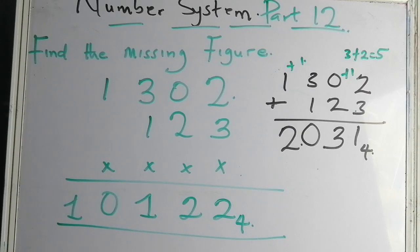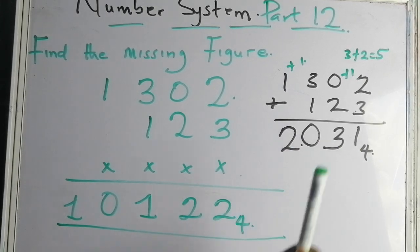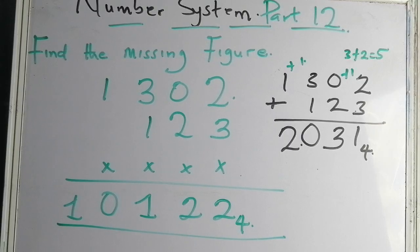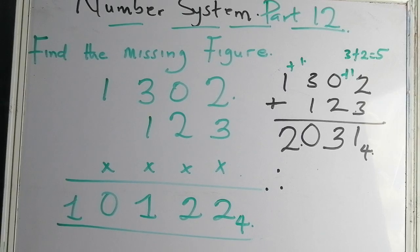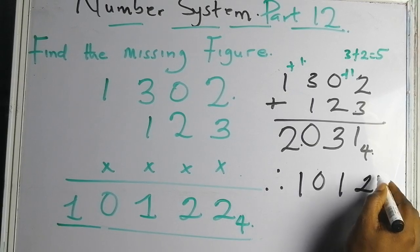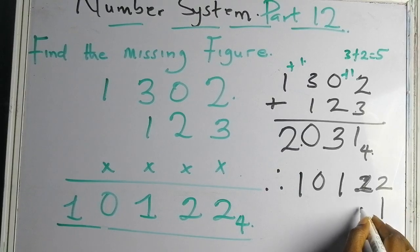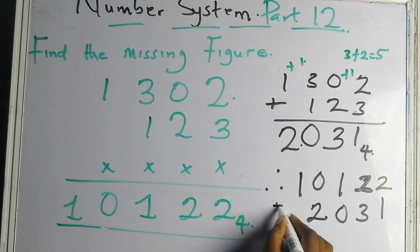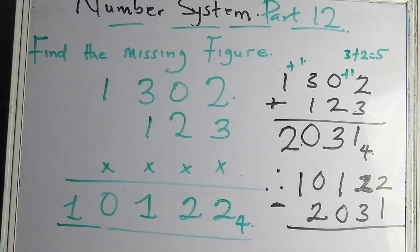So 1302 plus 123 equals 2031 in base four. What we do next is subtract 2031 in base four from the given answer to find the missing figure. Therefore, the missing number is the result of subtracting: 10122 minus 1302 — that is, we subtract 2031 from 10122, working in base four.